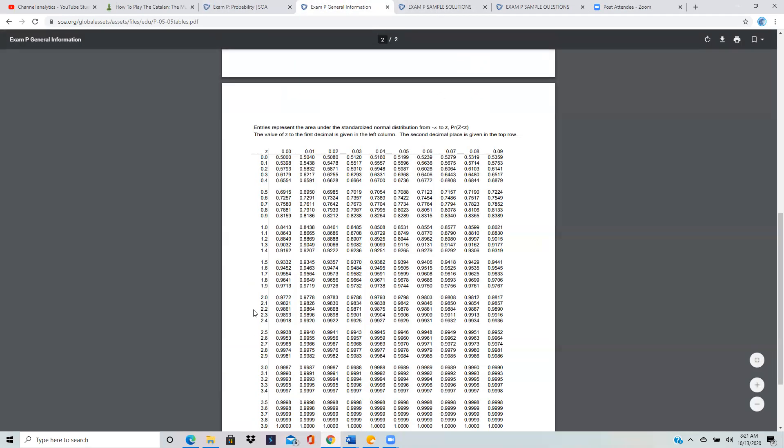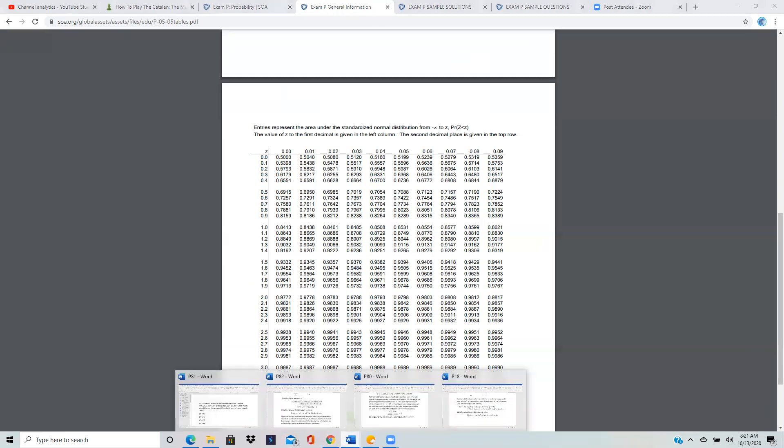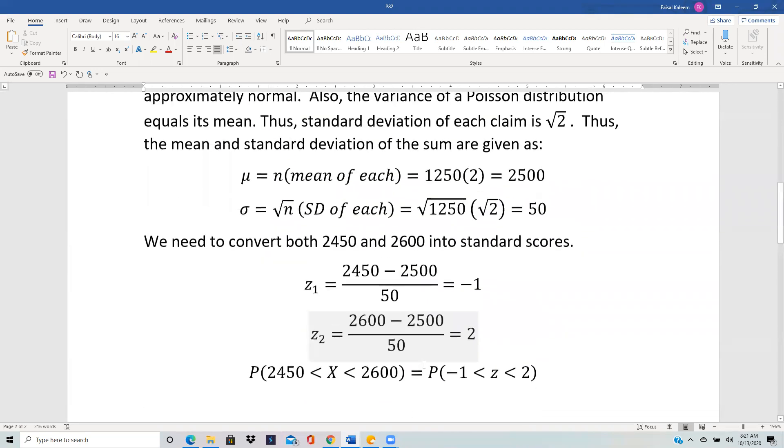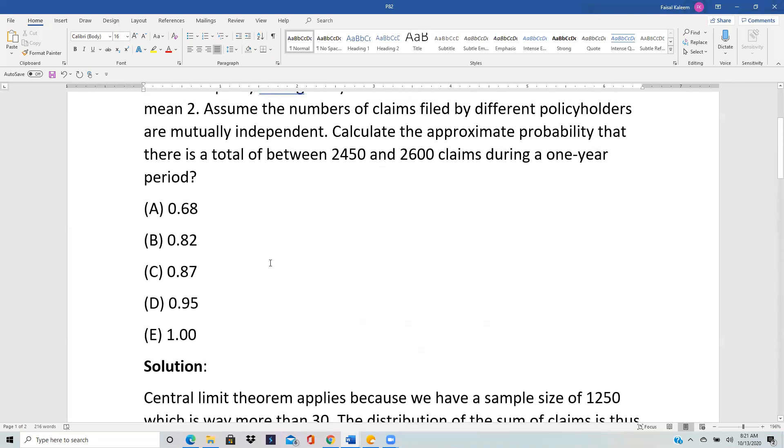Okay, so for the 2, we have 0.9772. And for the 1, we have 0.8413. So 0.9772 and 0.8413 and then minus 1. And so that gives us 0.82, which is choice B.